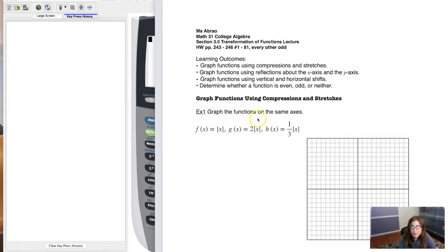So we want to graph these functions on the same axes. And then I want us to think about what's the difference between these functions. Because if you look at f, g, and h, they all have the absolute value function in them. This is your basic absolute value function. It's one of your toolkit functions. This is twice the absolute value of x, and this is a third of the absolute value of x.